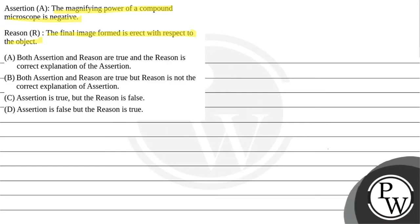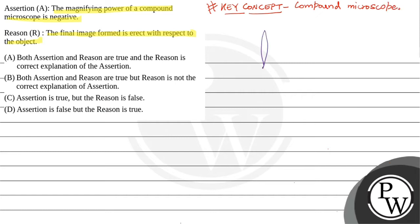Let us first understand the key concept of this question. The key concept is based on the compound microscope. In the case of a compound microscope, there are two convex lenses — one is the objective lens and one is the eyepiece.